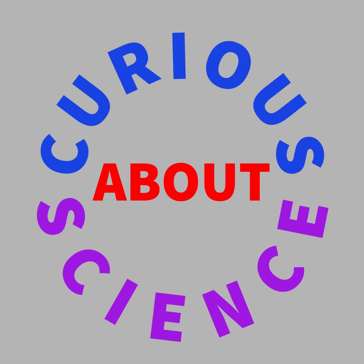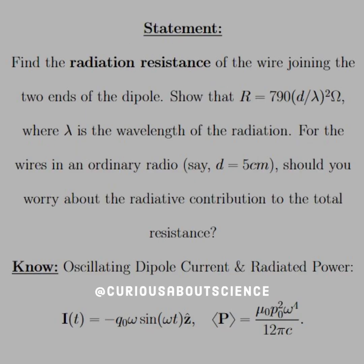Alright, so let's keep pressing through. Find the radiation resistance of the wire joining two ends of the dipole. In this case, it's an electric dipole connected by a wire, where we have a plus charge at one end and a minus charge at the other.